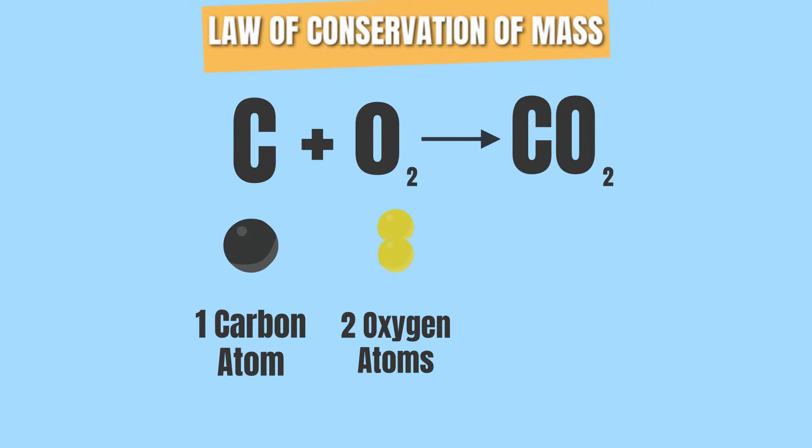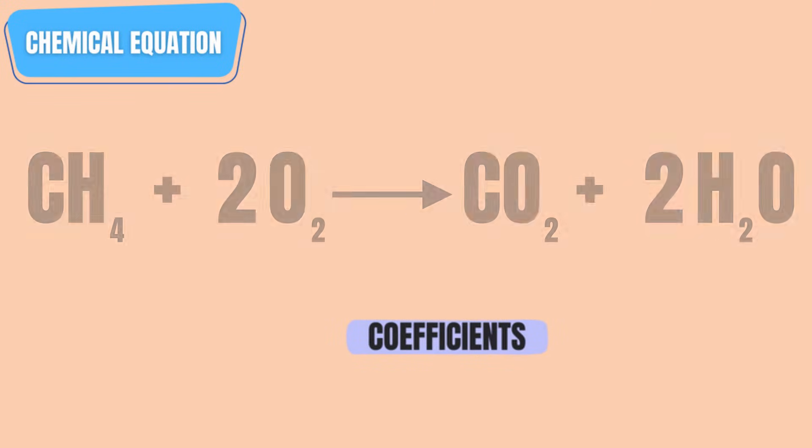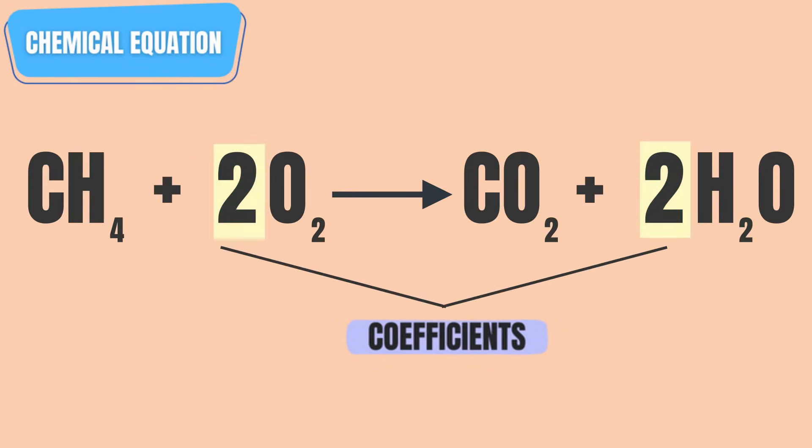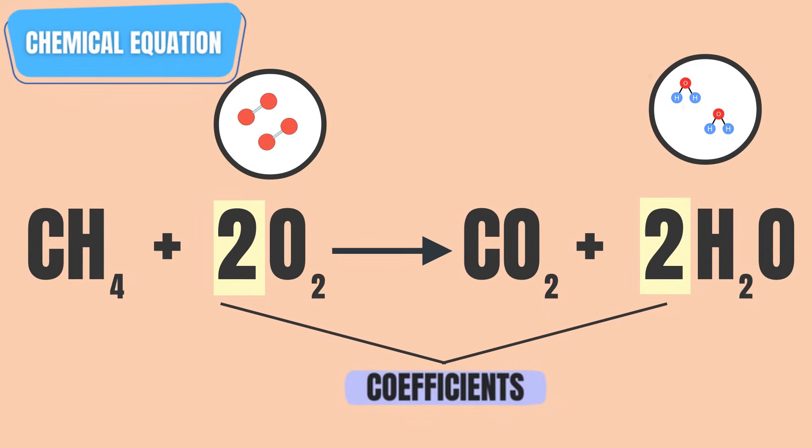That's why it is important for chemical equations to demonstrate a balance both in the reactant side and the product side. But how do we balance chemical equations? We use coefficients. Coefficients are numbers that we place in front of the chemical formulae to show how many of their molecules are involved in the chemical reaction.